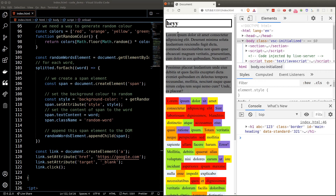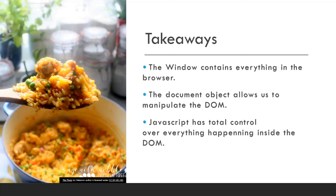Key takeaways for this lesson: the window object contains everything inside the browser, including all built-in functions and objects. The document object allows us to manipulate the DOM and has all the functions we need to change DOM content. JavaScript has total control over everything happening inside the DOM. That's it for now, and I'll see you in the next lesson.